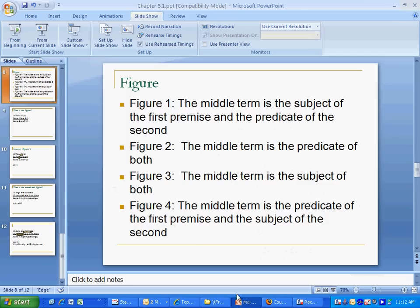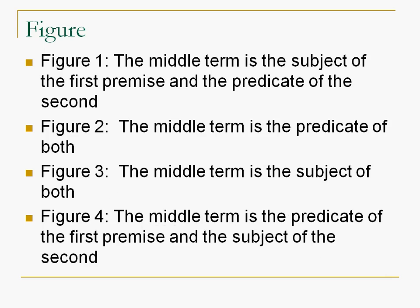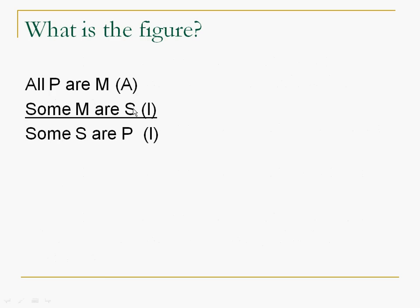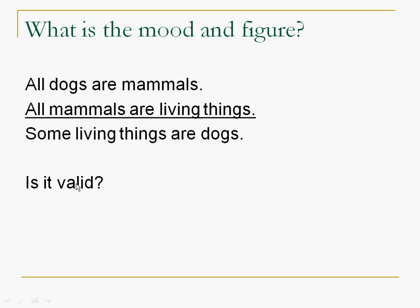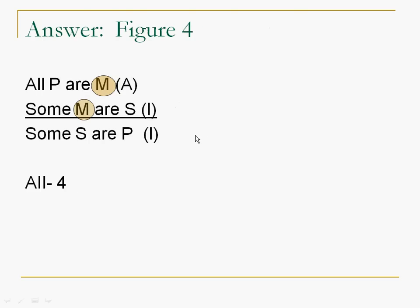In any case, we now can see where essentially the figure is determined by the position of the middle term. So let's go back to this, and let's see. So we've got our mood, right, AII. So let's look at the figure. What is the figure here? And remember, now we're looking at the position of the middle terms, and the answer is figure 4. I might have jumped the gun a bit, but I'm sure you guys were looking. I'm hoping you paused, but notice that figure 4, we can see by looking at the middle terms, it's the predicate of the first statement, subject of the second, and so this is an AII 4.